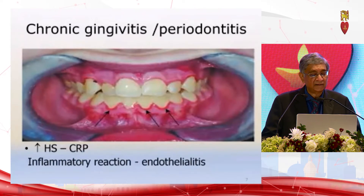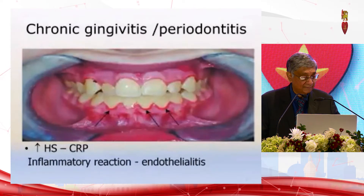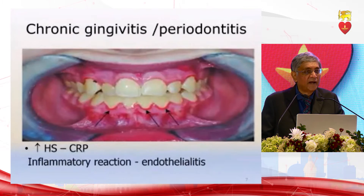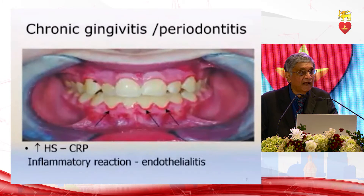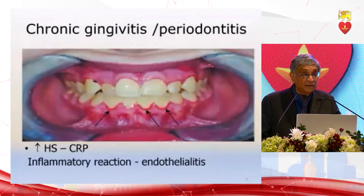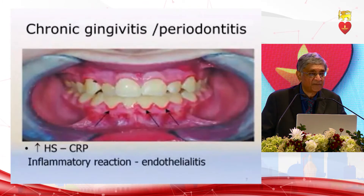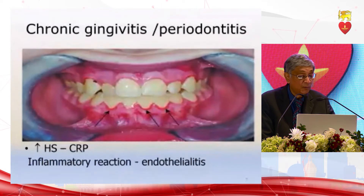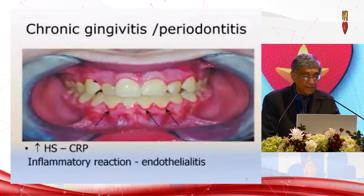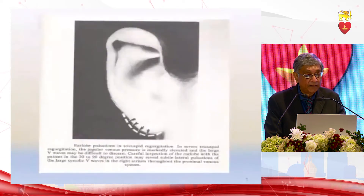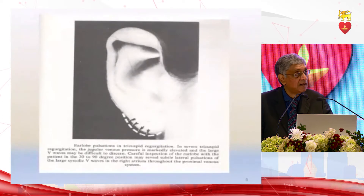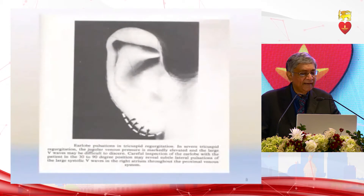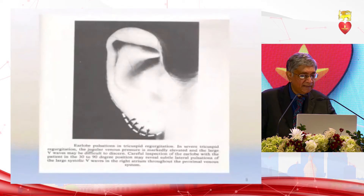Chronic gingivitis and periodontitis are risk factors for associated ischemic heart disease. The increase in C-reactive protein is marginal — it is the high-sensitivity CRP, typically three to six (not more than six, which might indicate full-blown infection), representing the low-grade inflammation that is going on. Coming to the ear again, if you look at the ear and see that it is pulsating, it is a physical sign of tricuspid regurgitation.